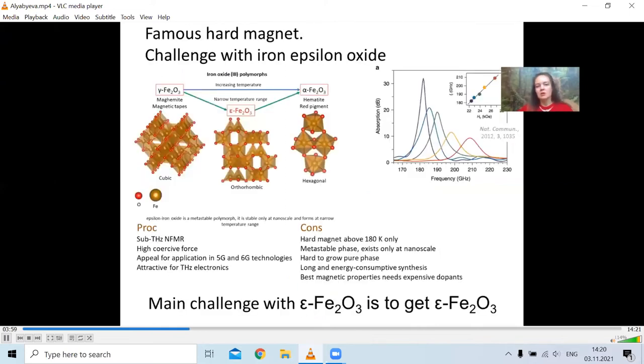Among famous hard magnets, there are rare earth magnets. But rare earth has a problem, they are rare earth and it does not allow one to use them in industry. They are very expensive and very rare. Among non-rare earth materials, there is epsilon iron oxide.